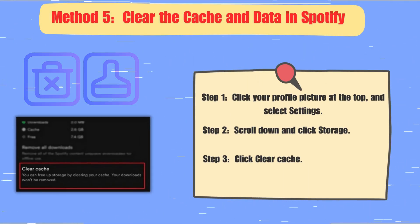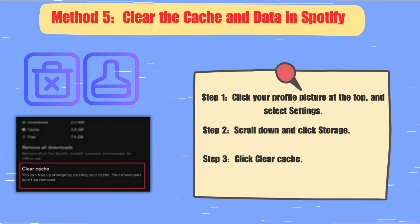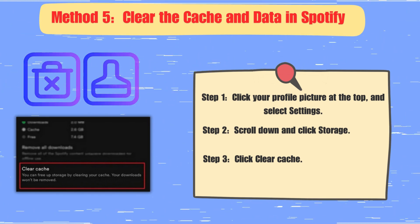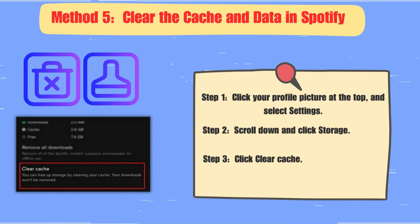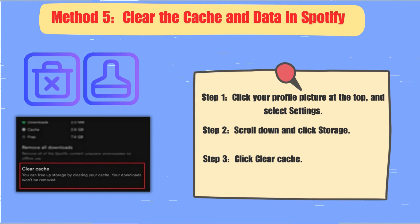Method 5: Clear the Cache and Data in Spotify. Clearing the large amount of cached files and data on Spotify is another good way to solve the problem of Spotify songs being greyed out.